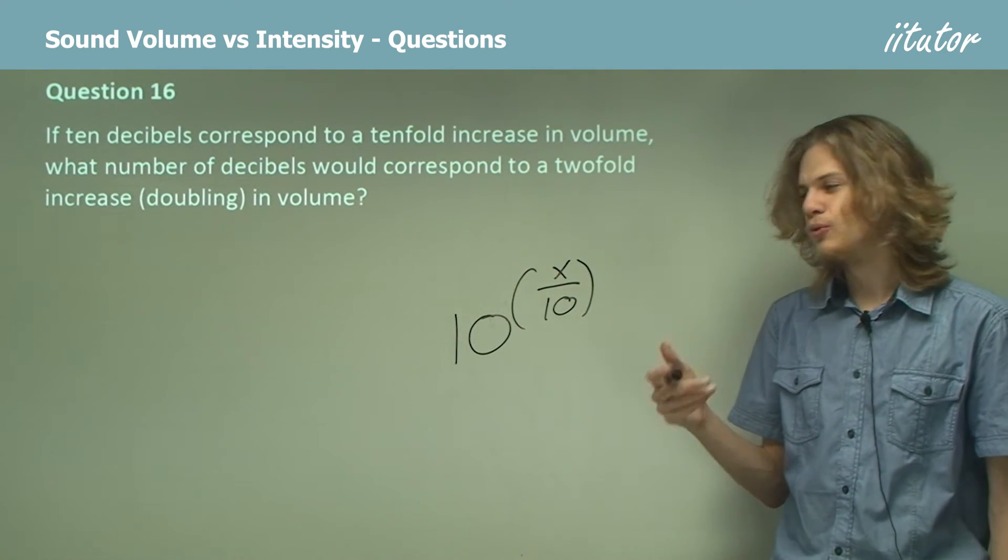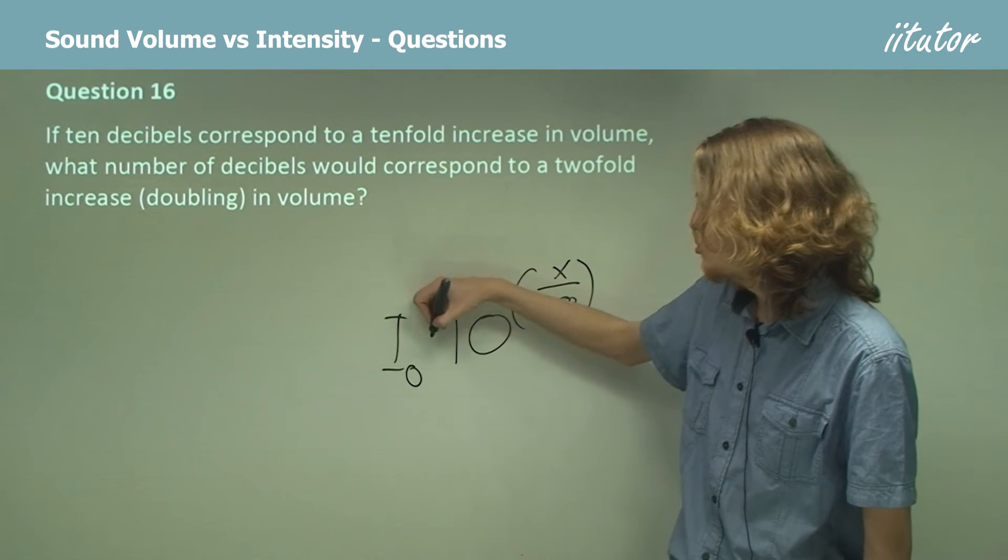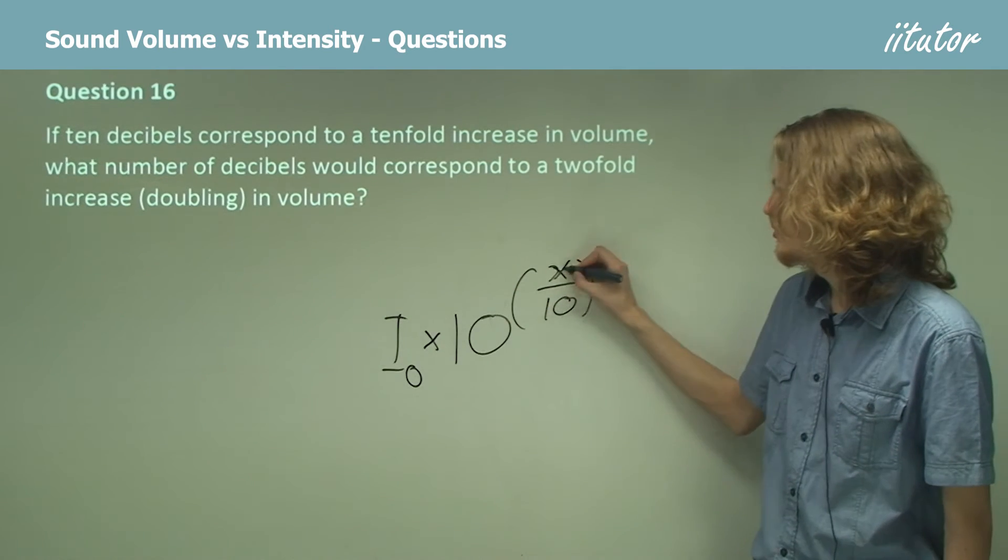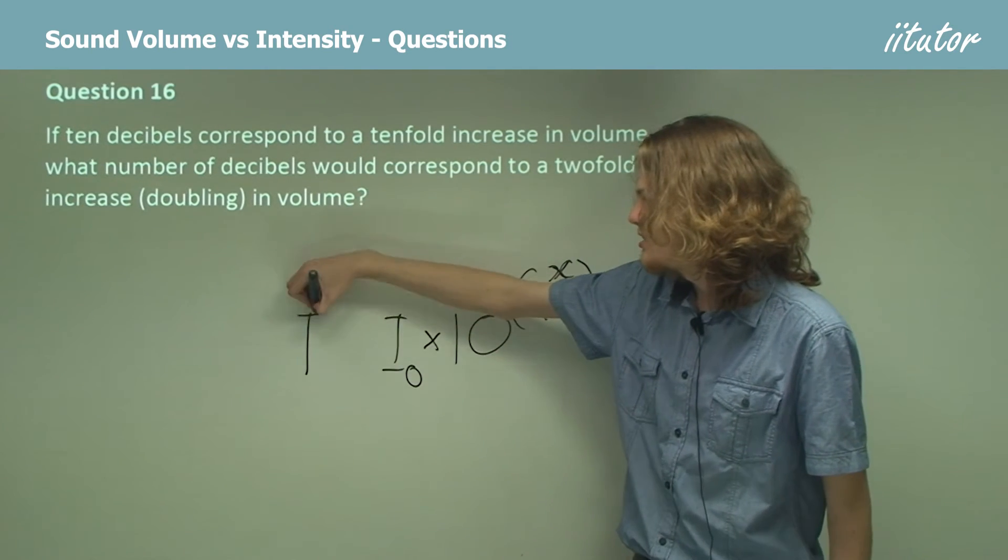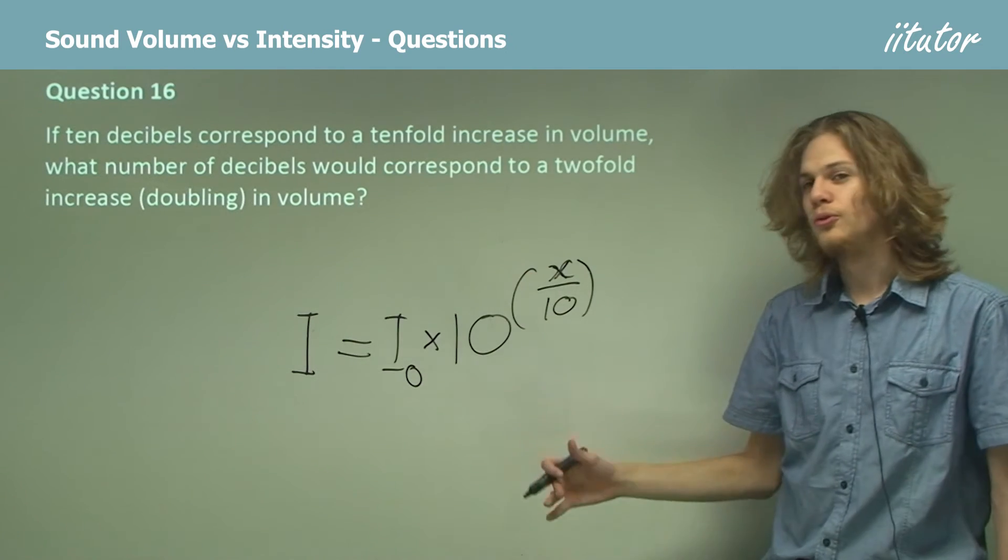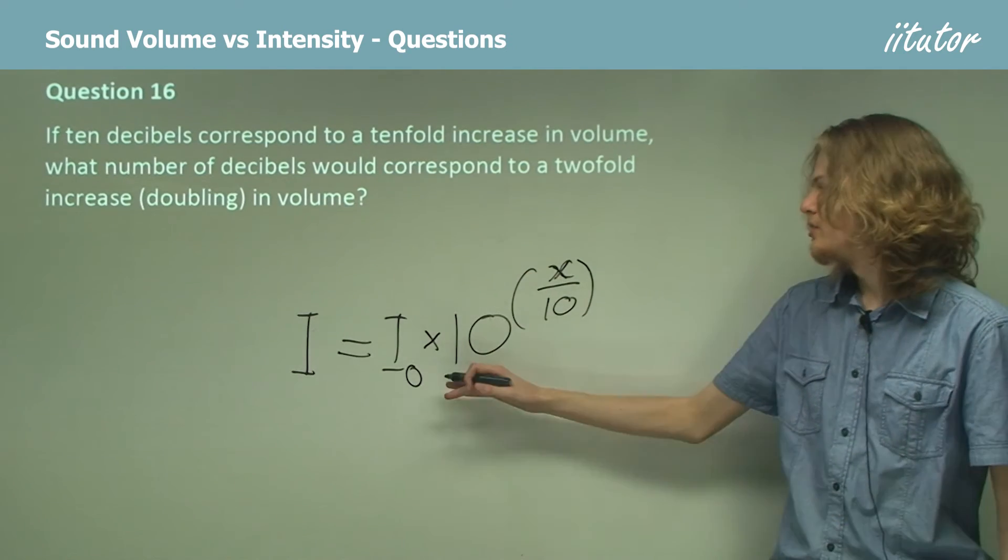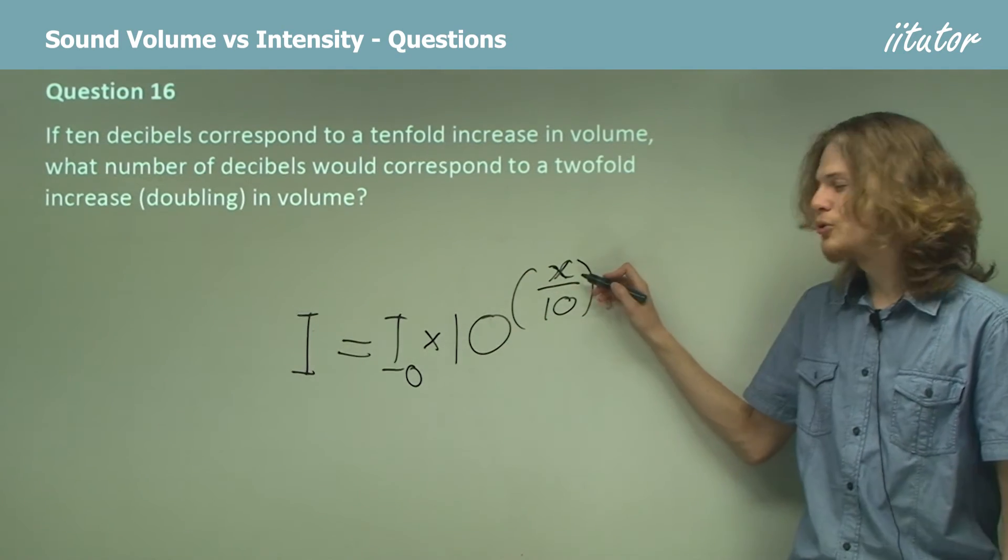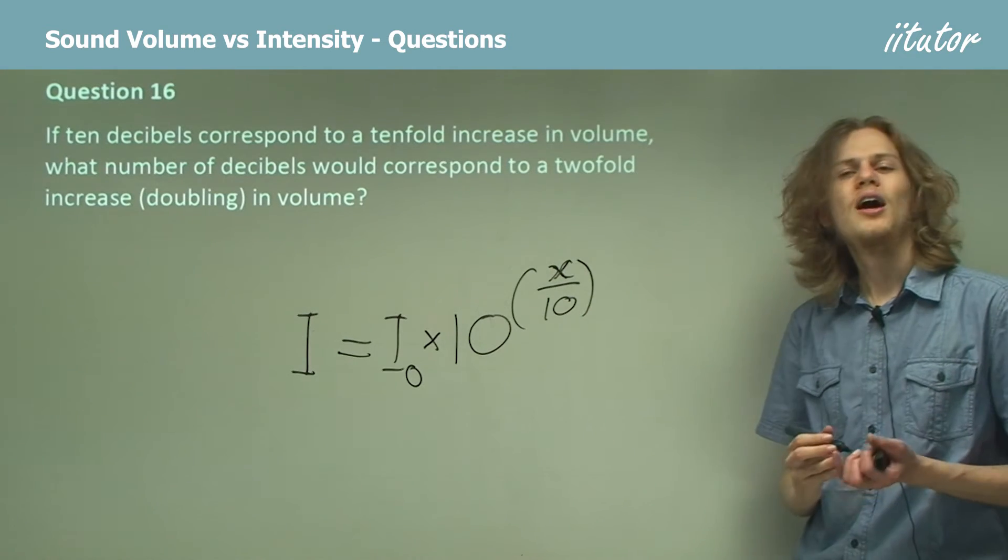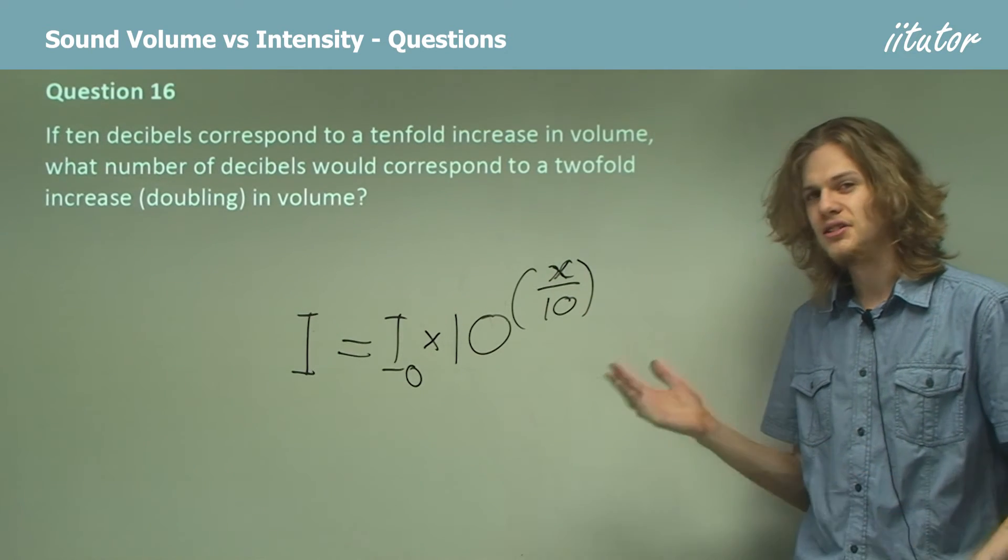Of course, we need to have a starting point as well. So we'll call that I0. So that means that the intensity of a sound equals I0, the original intensity, times 10 to the power of the increase in decibels over 10. And this will give us an equation for how intense the sound is.